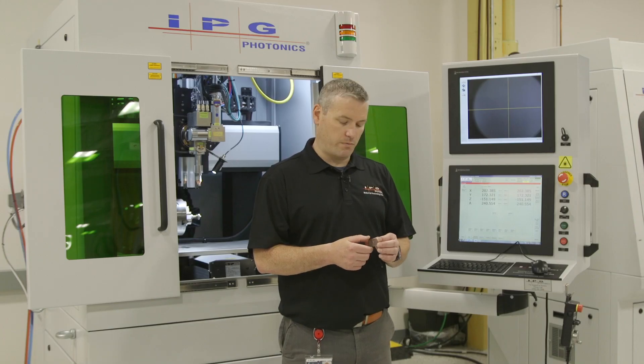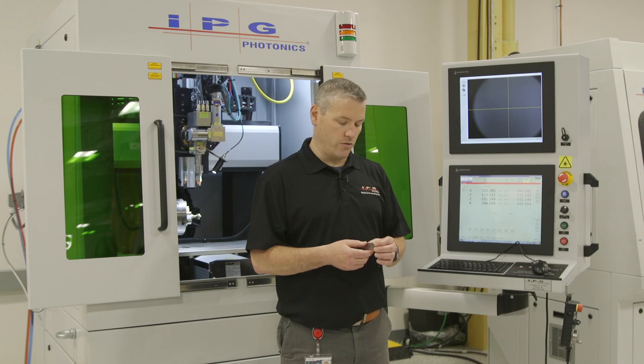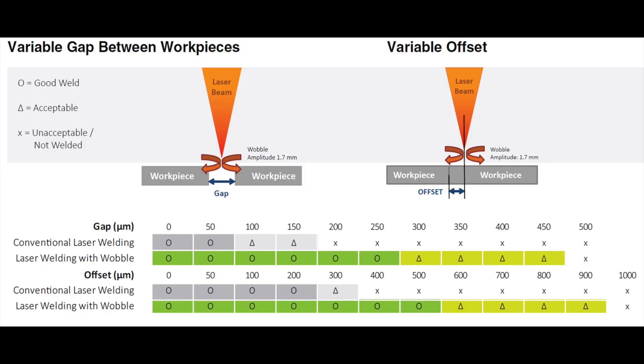Without the wobble head, this piece would be impossible to weld. But with the wobble head, it enables us to handle larger gap variation in parts, and so we're going to put this together now.